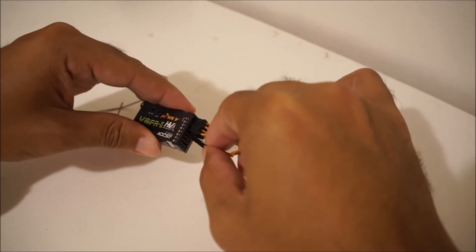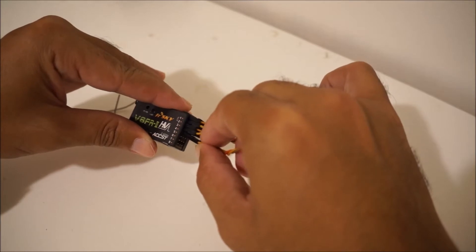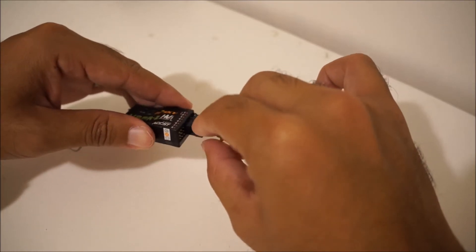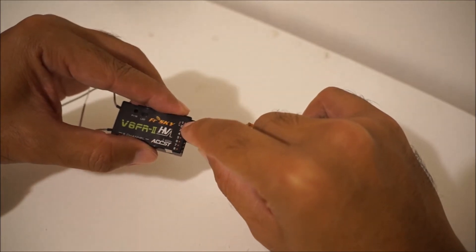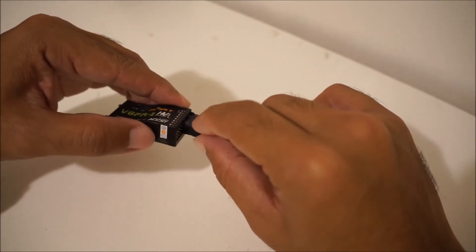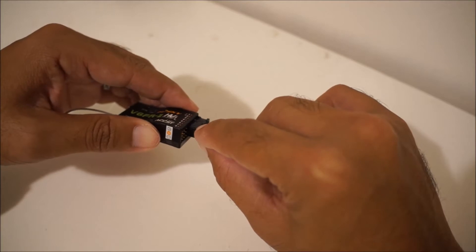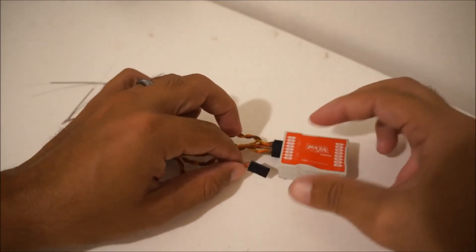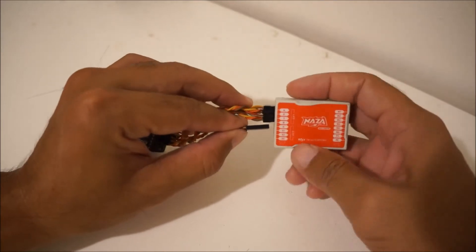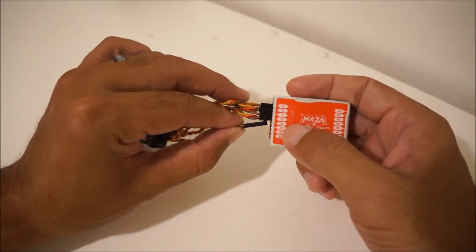And then the last one is channel five. That would be a spare channel on your radio that you can assign it to a toggle switch or something that you can switch between flight modes on your flight controller. And again on the Naza that's the U symbol.